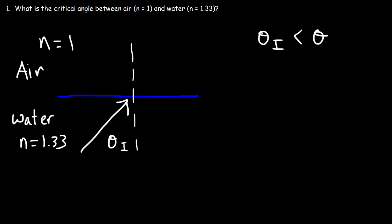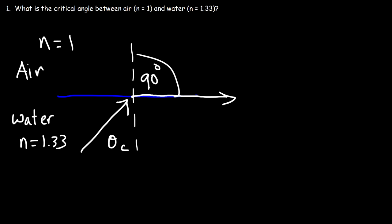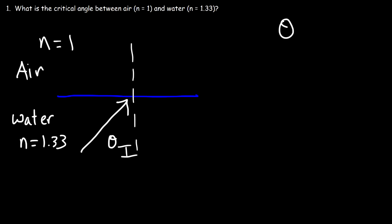As the incident angle increases and becomes equal to the critical angle, the angle of refraction becomes 90 degrees, and so the light ray stays at the water-air interface. If the incident angle exceeds the critical angle and is greater than it, there's not going to be any refraction — total internal reflection will occur.